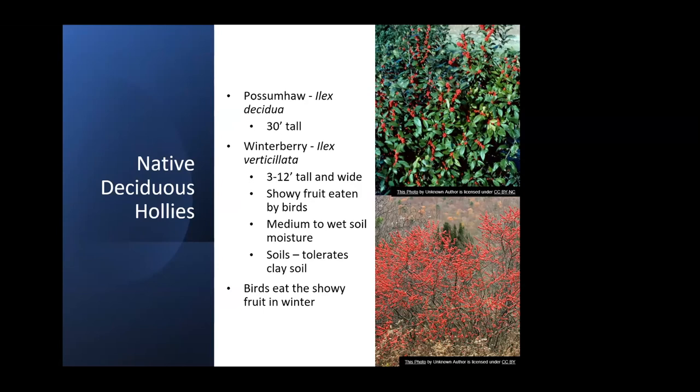We have some native hollies. Possumhaw grows out in the woods — easy to spot in the fall because of all the berries — and can get 30 feet tall with some selected cultivars. Winterberry is a shorter plant, three to twelve feet, and they both have orange to red berries that tolerate clay soil. Some selections are only two to three feet tall, so you can look for the right selection for your garden — Winter Sprite is a smaller one.